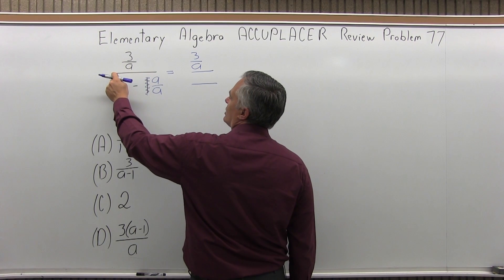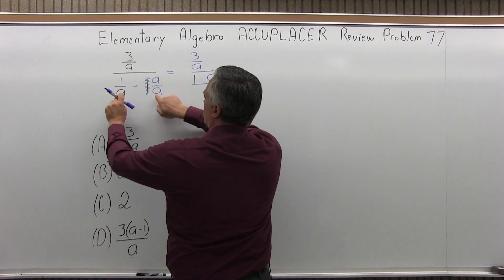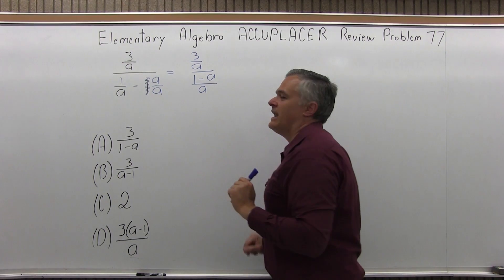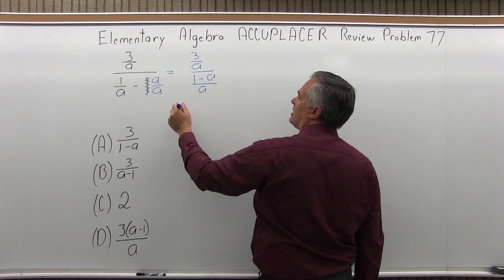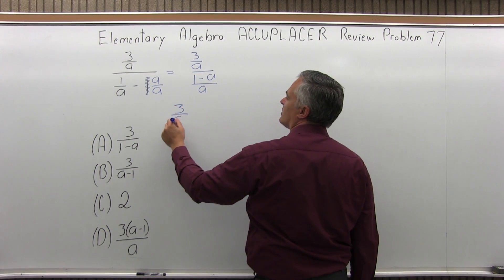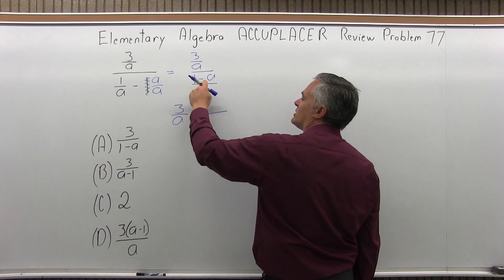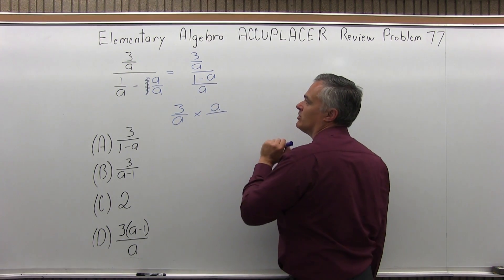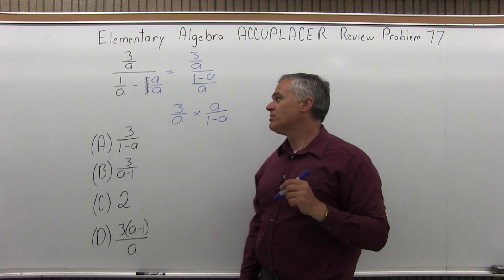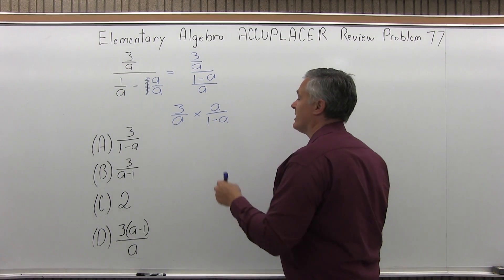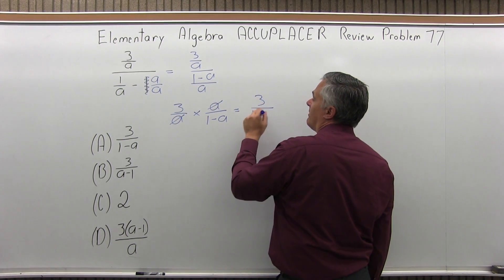So on the top I have 1 minus a — 1 from the first fraction, minus a from the second fraction — over my common denominator of a. Now both fractions have only a top and only a bottom. So I'm going to invert the lower fraction and multiply it times the top fraction. The top fraction, 3 over a, will stay. The division changes to multiplication, and the a that was in the denominator will become the numerator; what was the numerator goes down into the denominator: 1 minus a. I can just cancel a in the top and a in the bottom, giving me 3 over 1 minus a.